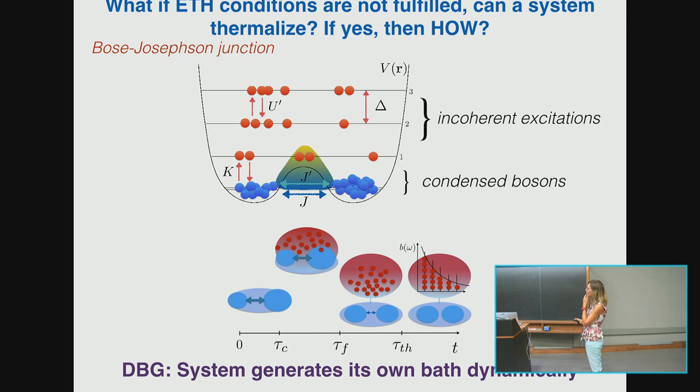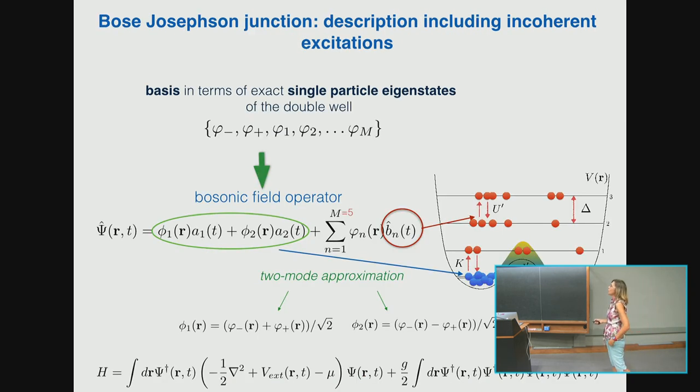We wanted to consider a more general case. First, what if ETH conditions are not fulfilled? Can the system thermalize? And if yes, then how? Because ETH doesn't tell you how the system thermalizes. What happens dynamically to the system? What are the leading time scales when the closed system thermalizes? We want to ask a much broader question. As an example, we chose the simplest non-equilibrium system, which is the Bose-Josephson Junction.